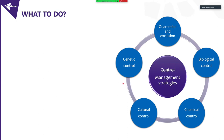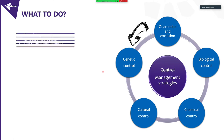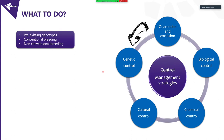Today we are going to explain the genetic control — because that's what I've been doing in recent years. For genetic control, I'm talking about breeding, and we essentially have three options: pre-existing resistant genotypes found in nature, conventional breeding by hybridization, and non-conventional breeding using gene editing, transgenics, or mutagenesis.